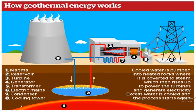How does geothermal energy work? Component number one is the magma, and number two is the water reservoir. This hot water enters through the turbine, which is number three. The turbine is coupled with a generator. As the turbine rotates, the generator also starts to rotate and electricity is generated. Through a transformer, it is passed to households or industries. The remaining water from the turbine is passed to a cooling tower, number eight, through a condenser, and then passed again through another pipe.